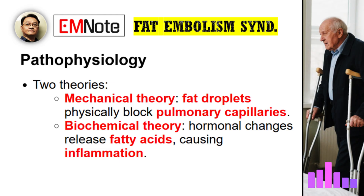This brings us to pathophysiology. There are two main theories: the mechanical theory and the biochemical theory. The mechanical theory suggests large fat droplets get released from the bone marrow and adipose tissue, enter the veins, and travel to the lungs. There they physically block the pulmonary capillaries like little plugs, causing the initial respiratory symptoms — the hypoxia. If they squeeze past the lungs, they can go systemic: brain, skin, kidneys.